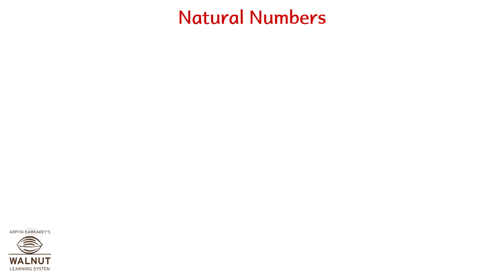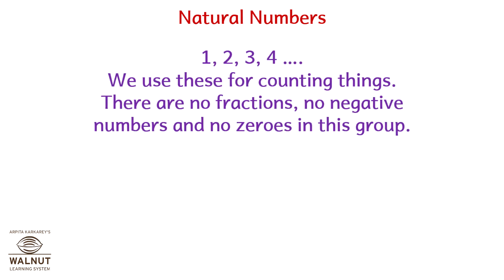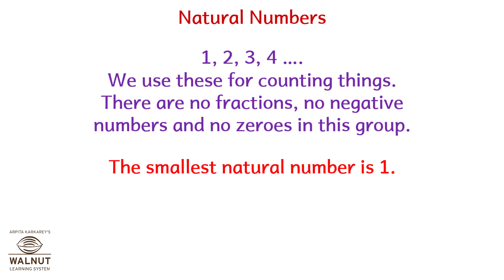Natural Numbers: one, two, three, four. We use these for counting things. There are no fractions, no negative numbers, and no zeros in this group. The smallest natural number is one.